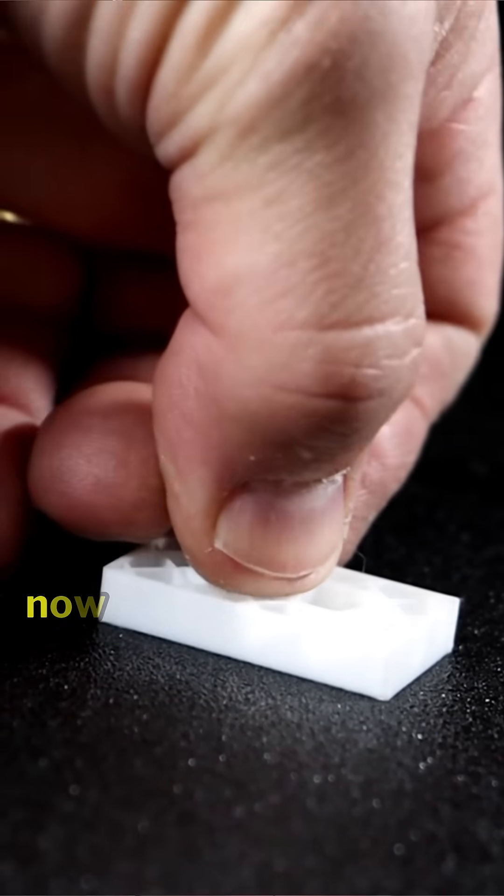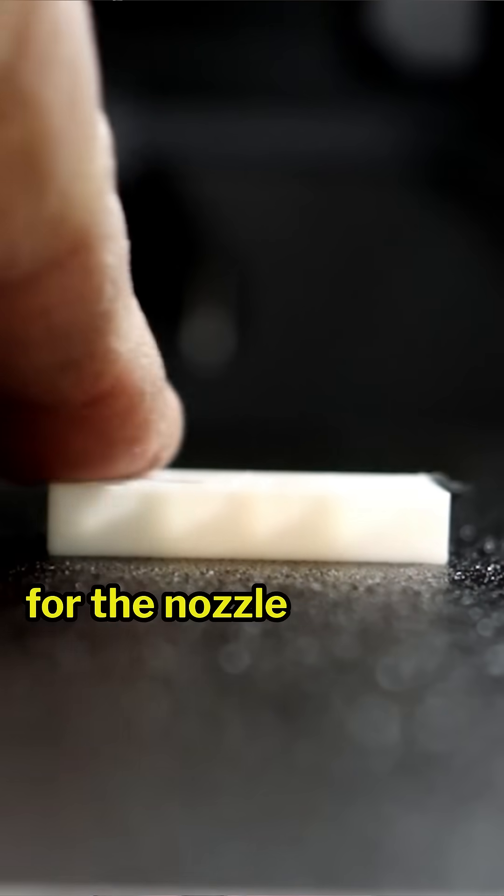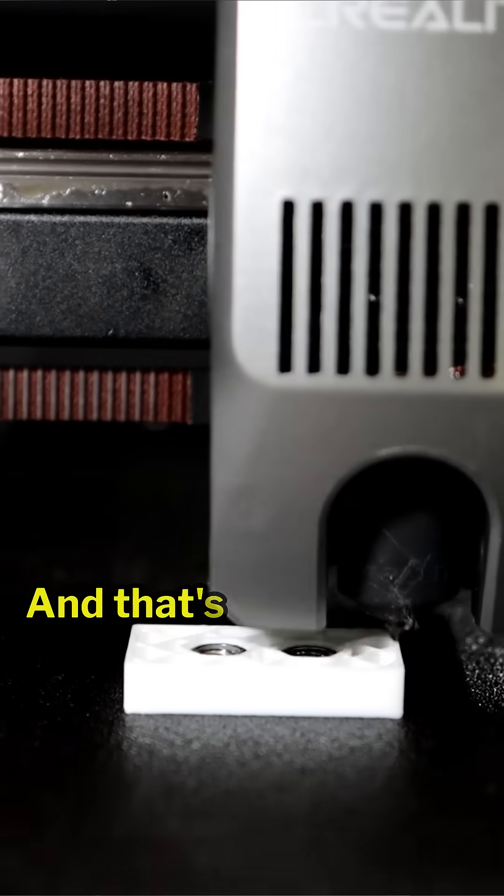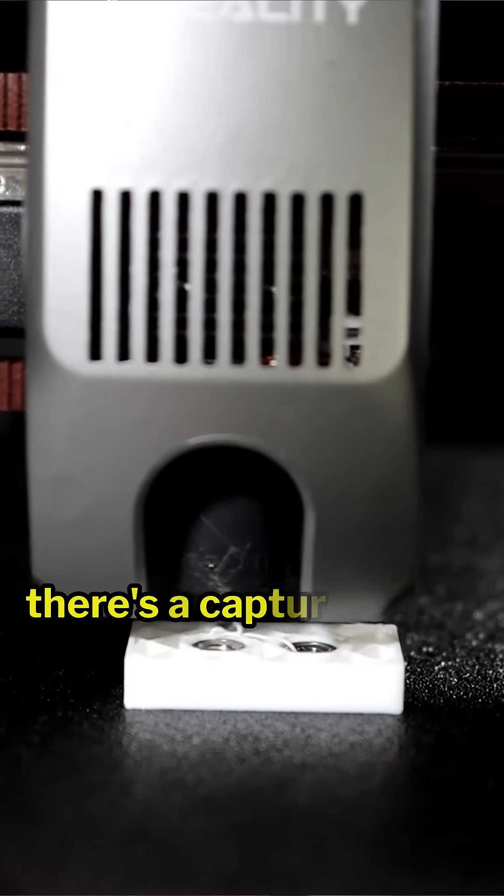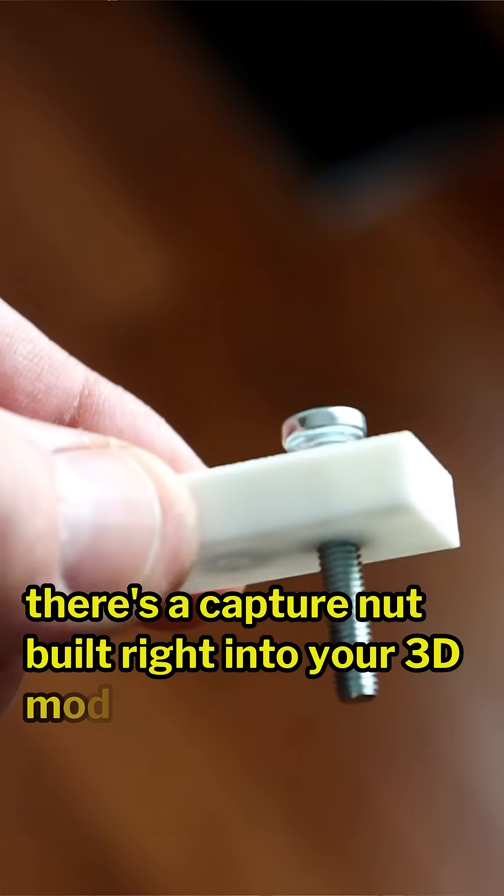Then just drop in the captured nut, make sure there's enough room for the nozzle to clear the top of the nut, and that's it. When the printer finishes, there's a captured nut built right into your 3D model.